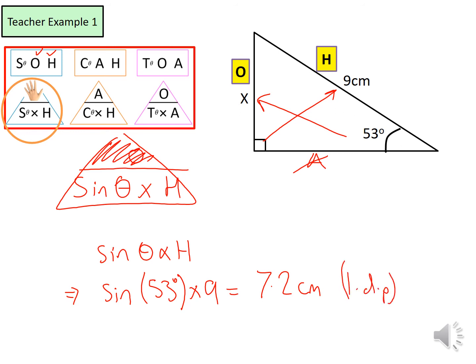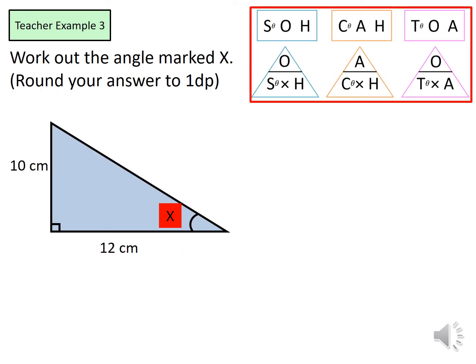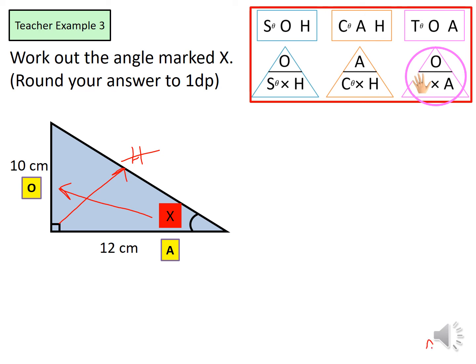Here's another example of finding the missing angle in a right angle triangle using trigonometry. Label the triangle: opposite the right angle is the hypotenuse, opposite the angle is the opposite side, and we're left over with the adjacent. We don't need the hypotenuse because it doesn't have a missing length or value, so we're looking at opposite and adjacent, which is the tangent ratio. Write down: tan θ = opposite over adjacent.